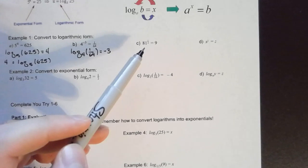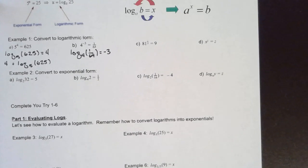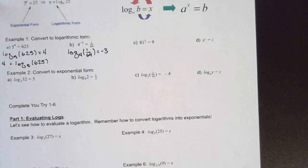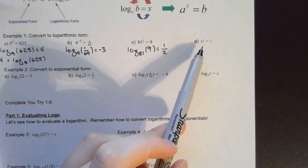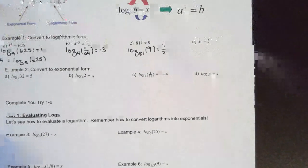Remember, 1/2 as an exponent is the same as the square root. So this time we'll have 1/2 by itself on one side of the equation; the base of our log is 81 and the argument is 9. And here we have an example with just variables: x to the y power equals z, so log base x of z equals y.